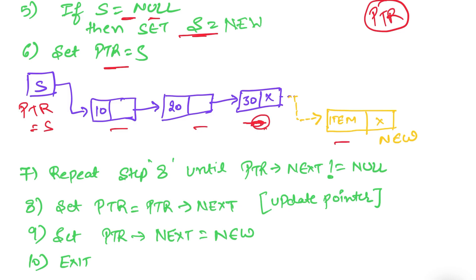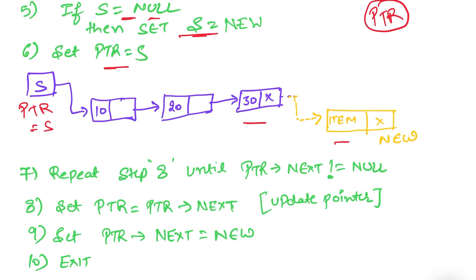We will be traversing the nodes — we will traverse, traverse, traverse — and when we have reached the last node we will add the address there to establish a connection. We will keep on repeating because we are traversing, and we will traverse until we find null. Until pointer next is not equal to null, we will keep on updating our pointer. Step 8 is basically updating our pointer: we set pointer equal to pointer next.